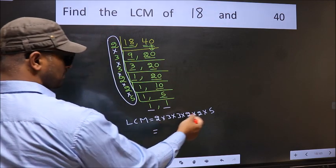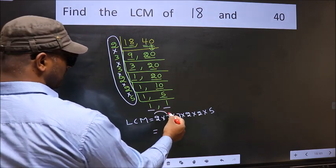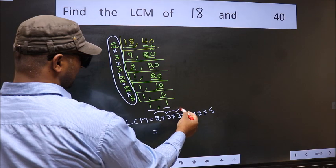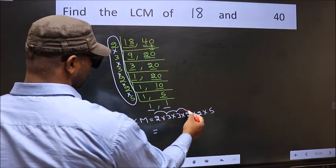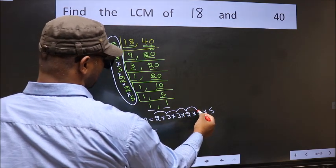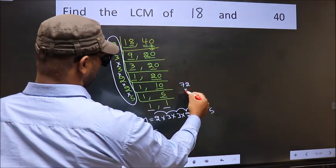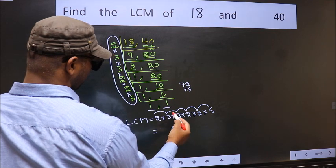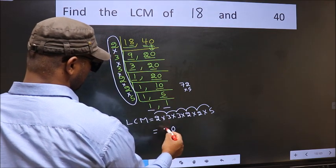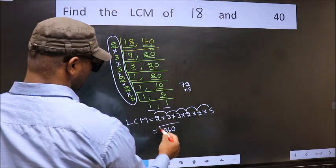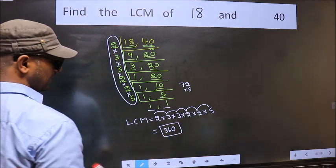So let us multiply these numbers. 2 into 3, 6 into 3, 18 into 2, 36 into 2, 72 into 5. 72 into 5: 5 tens 0, 1, 5, 7, 35 plus 1, 36. So 360 is our LCM.